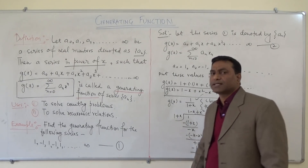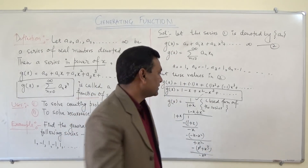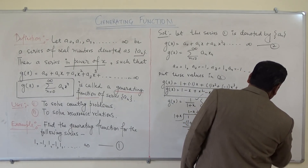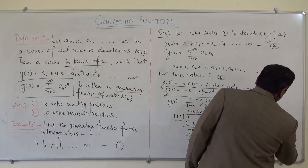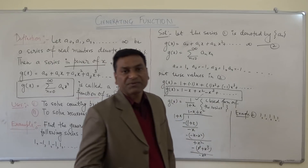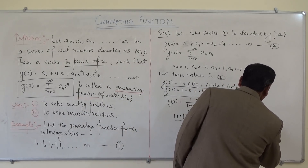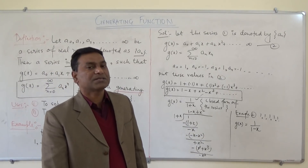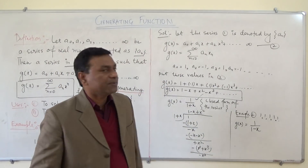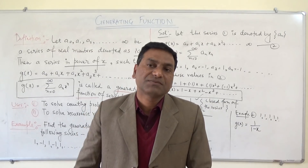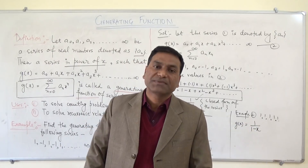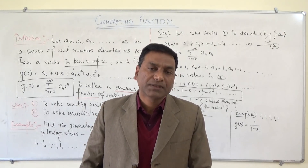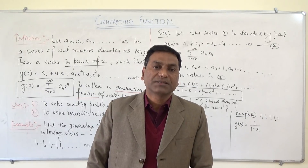In the same way we can also get the generating function for other series. For example, for the series 1, 1, 1, 1 and so on, we will get the generating function G(x) equals 1 upon (1 minus x). In this video we have seen what generating functions are — we defined them, saw their uses, and worked through an example to find the generating function for a particular series. Thank you.